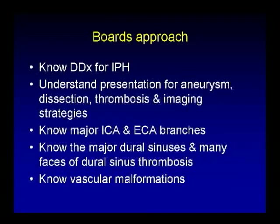In summary for your boards: you're not as likely to get shown a conventional angiogram, so don't worry too much about that anatomy. Know the differential diagnosis for intraparenchymal hemorrhage. Understand the presentation for aneurysm, dissection, and thrombosis, and your imaging strategies — what you're going to suggest next. Know your major ICA and ECA branches. Know the major dural sinuses and the many faces of dural sinus thrombosis — keep this one in mind for any intraparenchymal hemorrhage. And know the congenital vascular malformations we discussed.